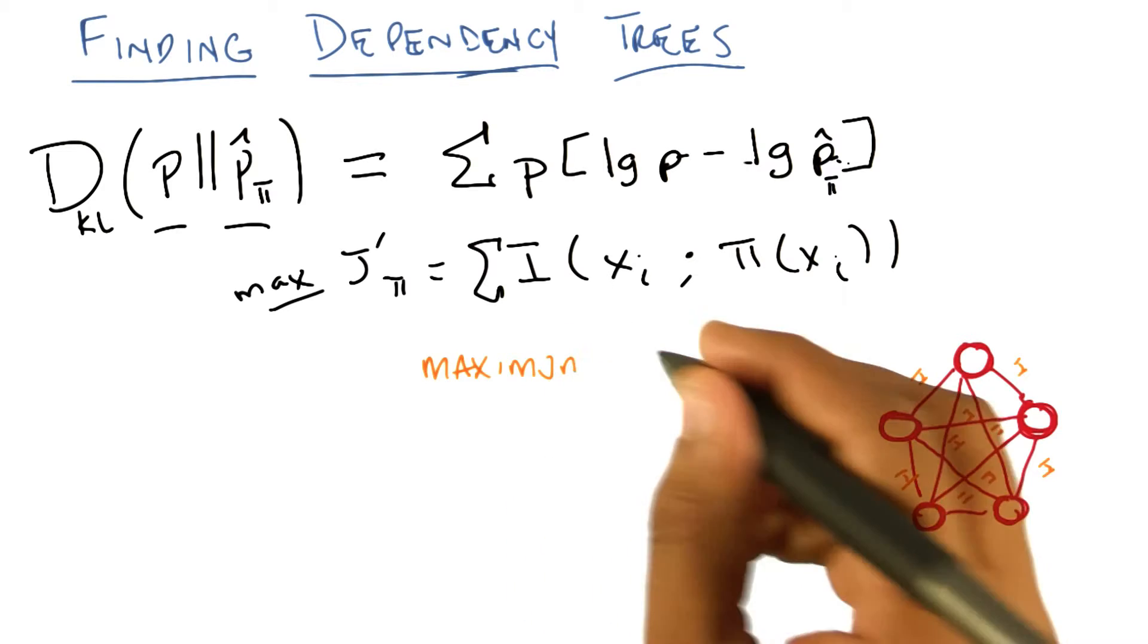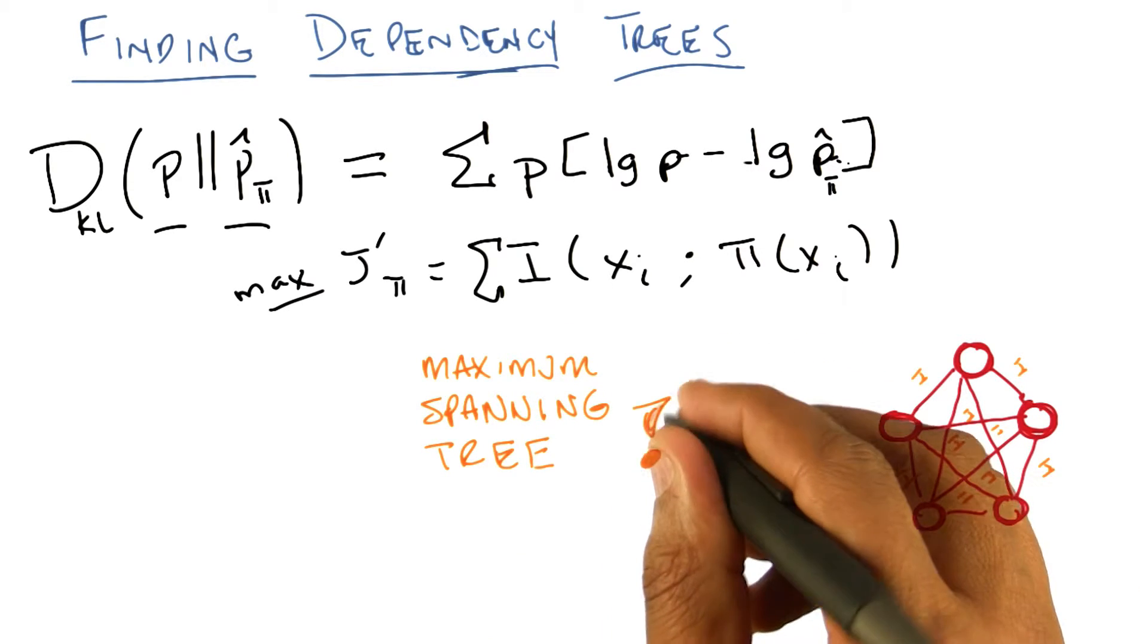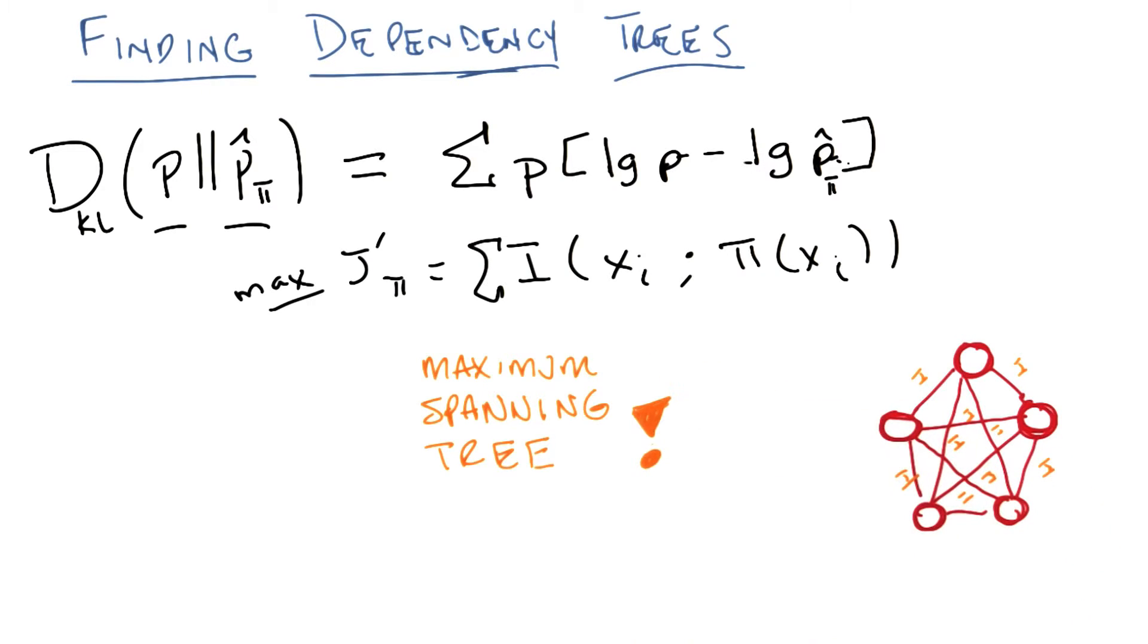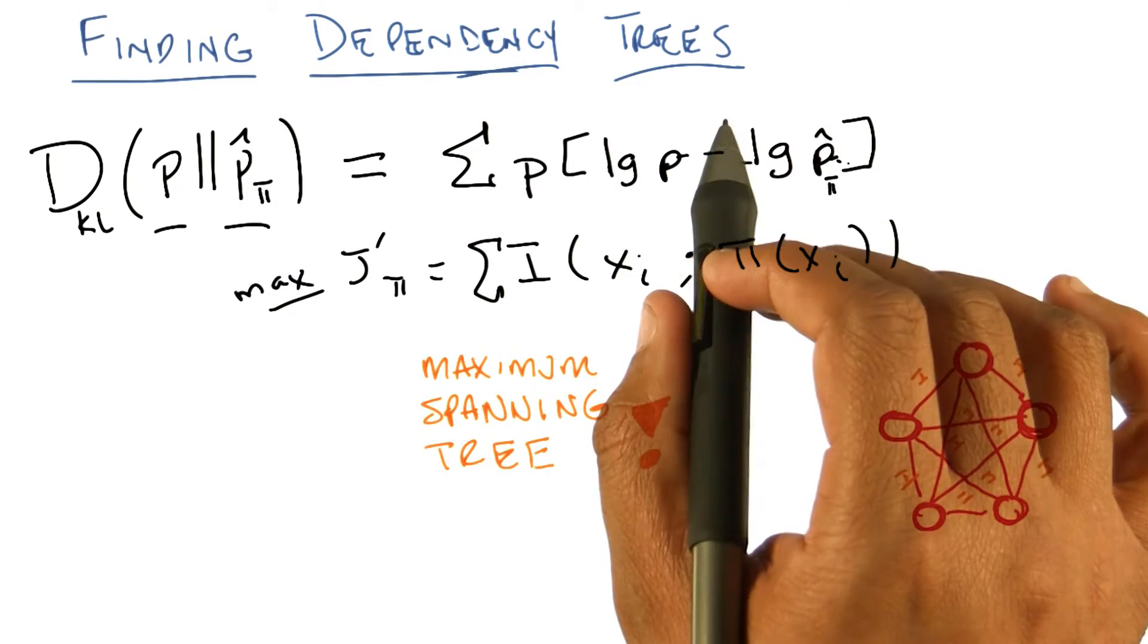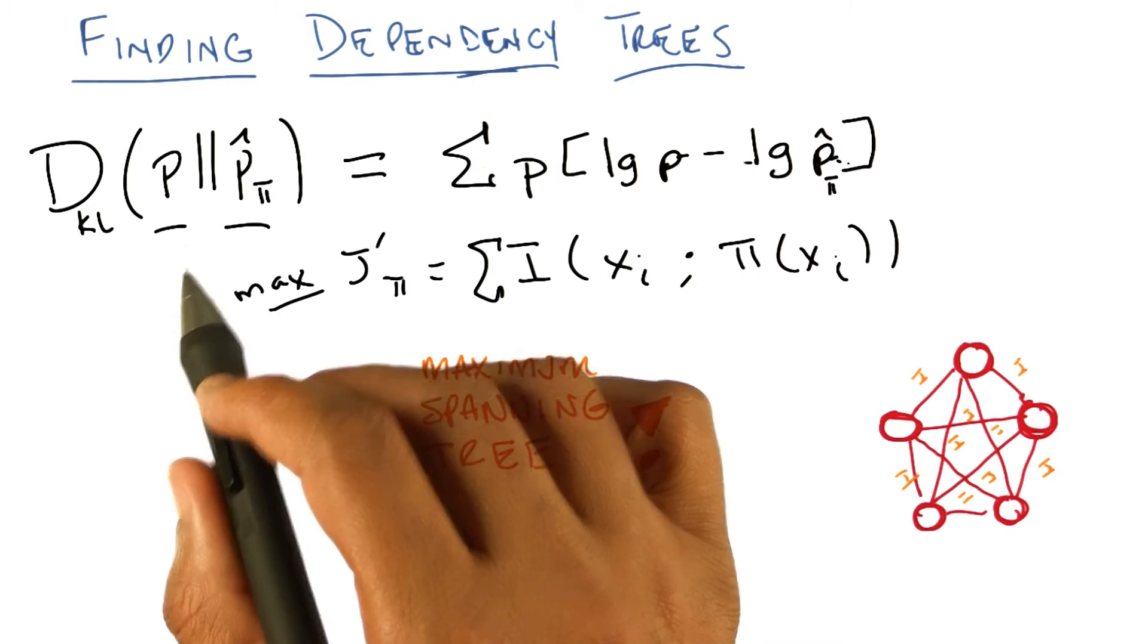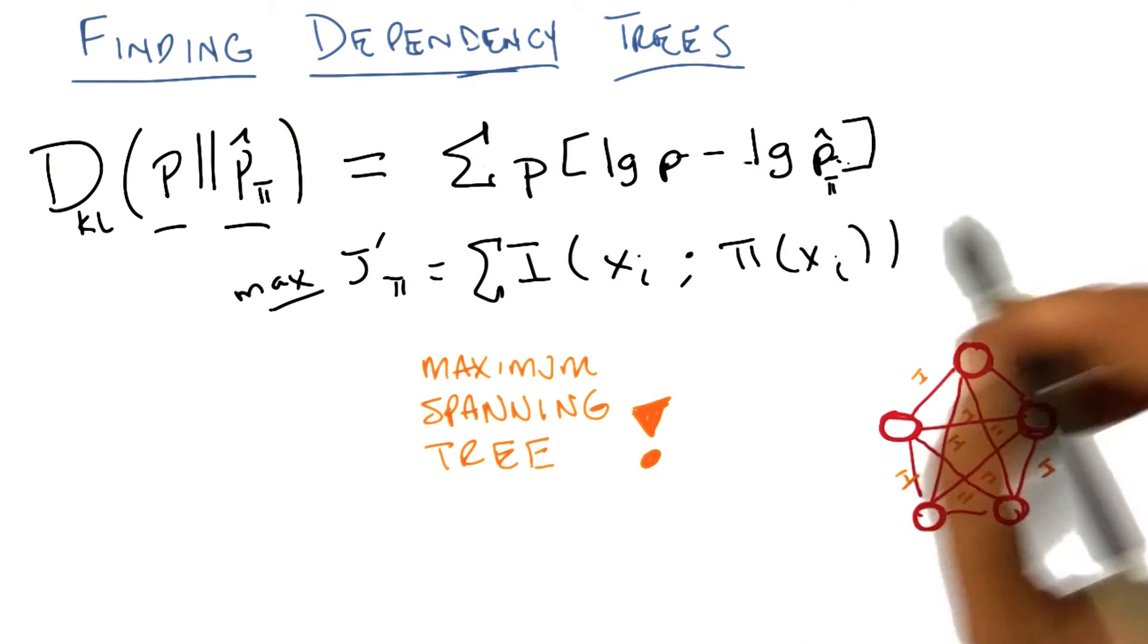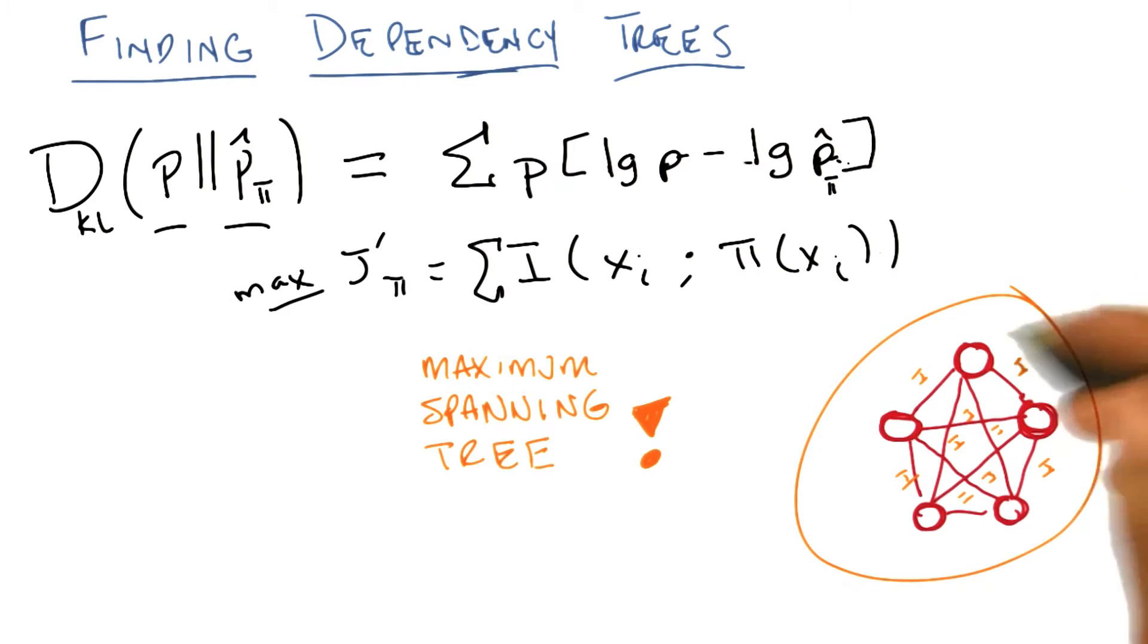Which we all vaguely remember from our algorithms class. You said it was terribly painful, but it's actually not. That's really neat. We turned the problem of finding the best distribution, in particular the best dependency tree independent of the true underlying distribution, into a well-known computer science problem of finding the maximum spanning tree. If we find the maximum spanning tree, we have found the best dependency tree.